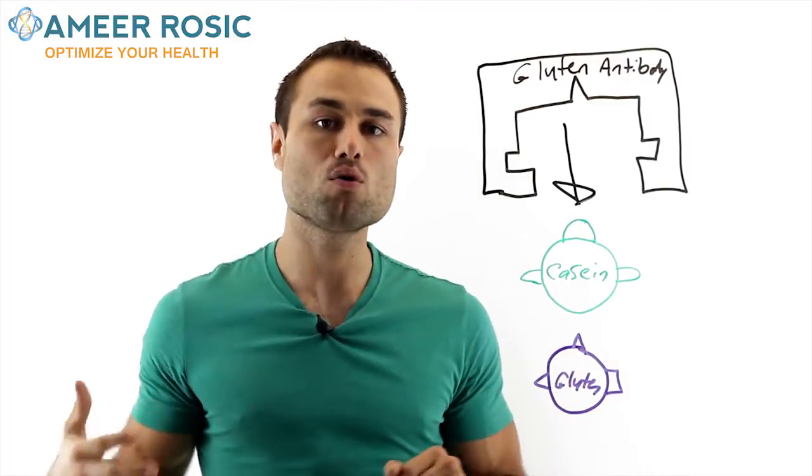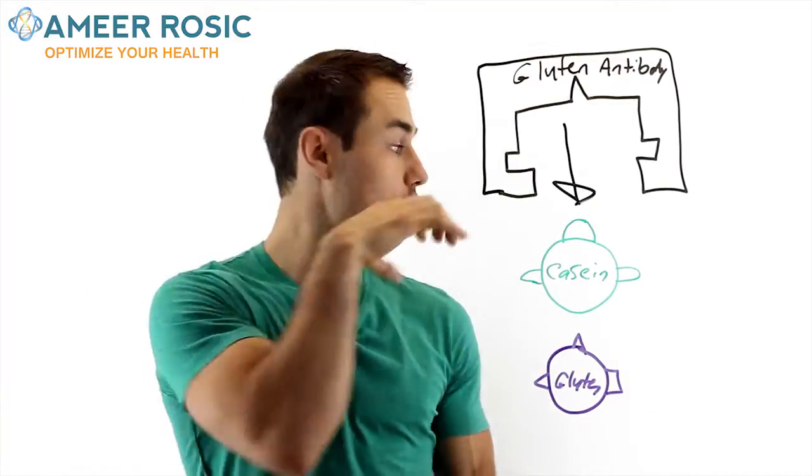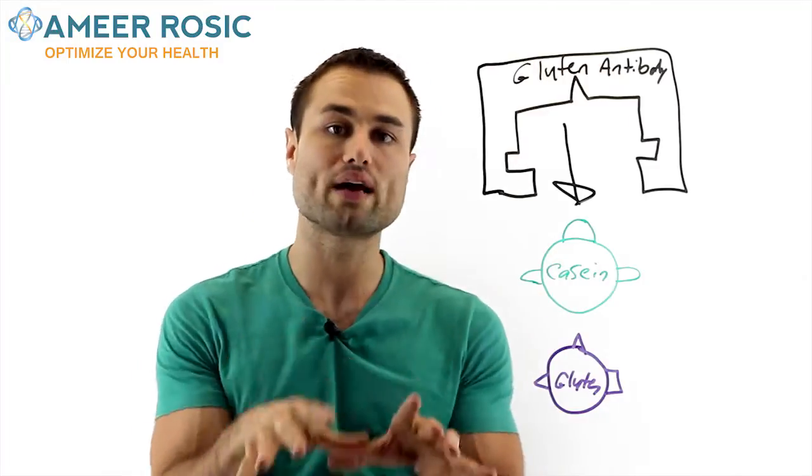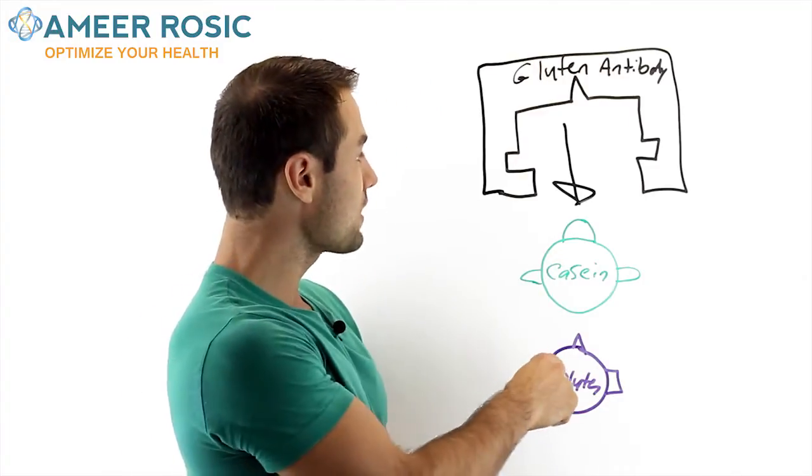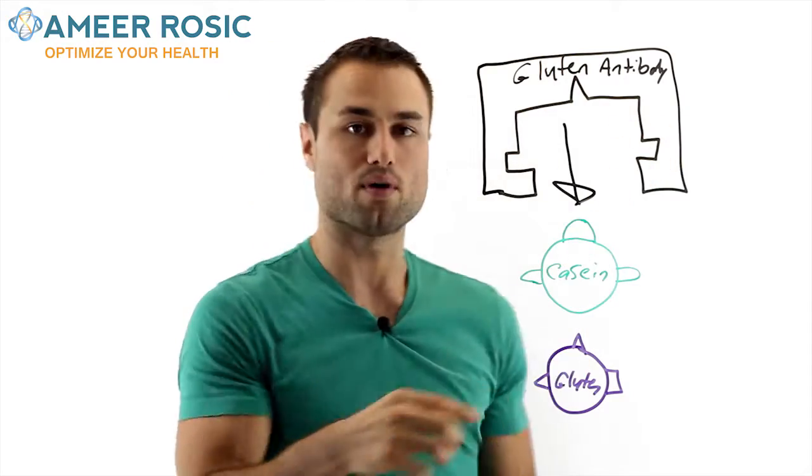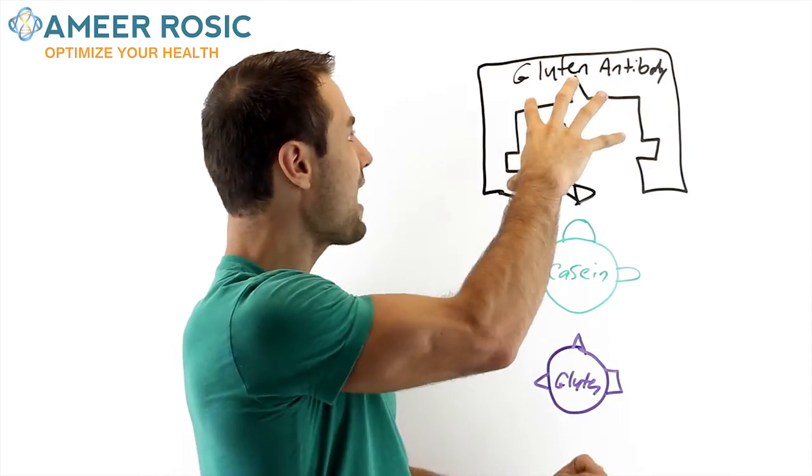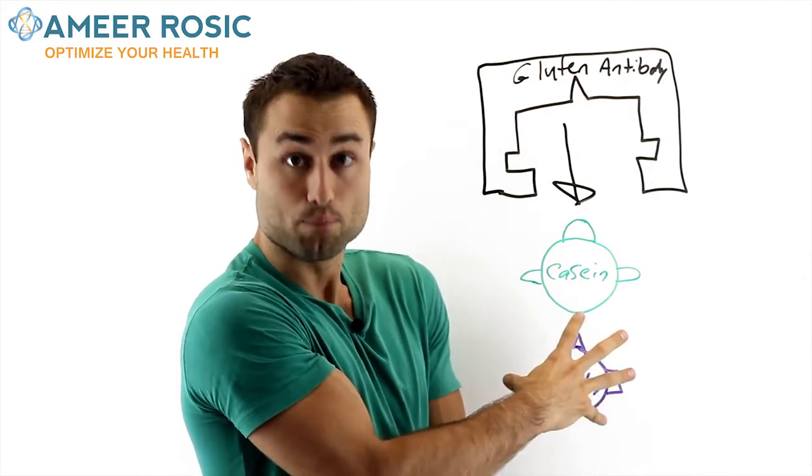Now the question arises, how does dairy actually fill into this equation? It's quite simple, you see. Because if you're looking at your antibody, you'll see these shapes within the antibodies. They're patterns, and these patterns will match the gluten protein.